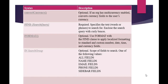There are different values available for search group: all fields, name fields, email fields, phone fields, sidebar fields, etc. These are very self-explanatory. These are the different types of search group you can specify — it is basically the scope of the fields that you want to search.